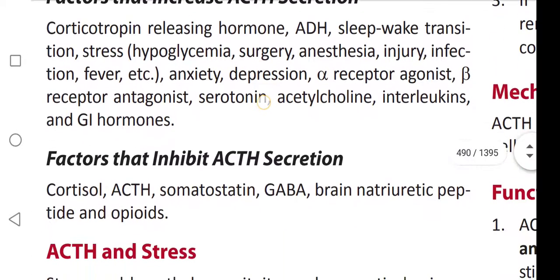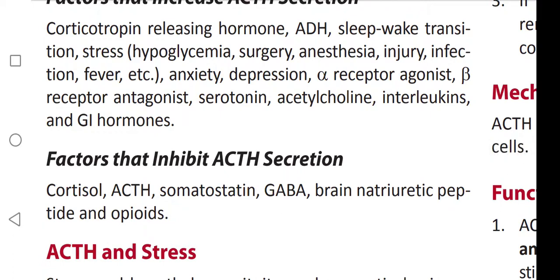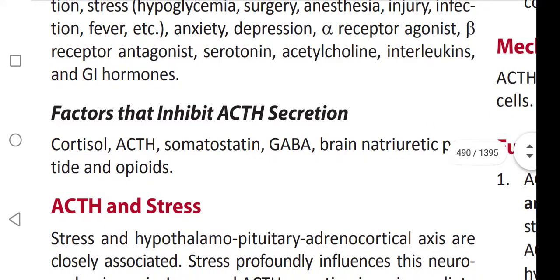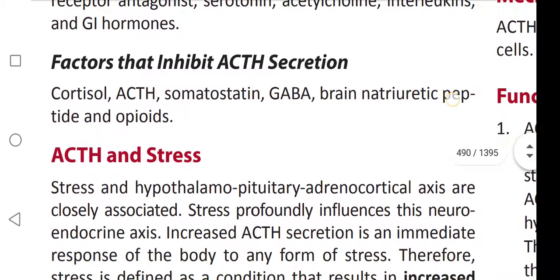Factors that inhibit ACTH secretion include: cortisol, ACTH itself (short-loop feedback), somatostatin, GABA, brain natriuretic peptide, and opioids.